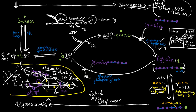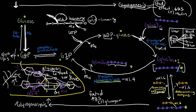Once the alpha-1,6 bonds are removed, we are back to a linear chain. To break it down further, each alpha-1,4 bond — each blue line — must be cleaved one by one. The enzyme glycogen phosphorylase does this: it chops off the terminal glucose and removes the alpha-1,4 bond. From the word 'phosphorylase,' a phosphate is added. So the glucose removed from glycogen is not free glucose, but glucose-1-phosphate.